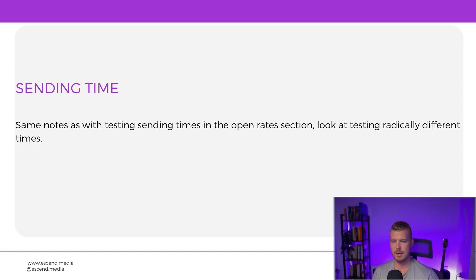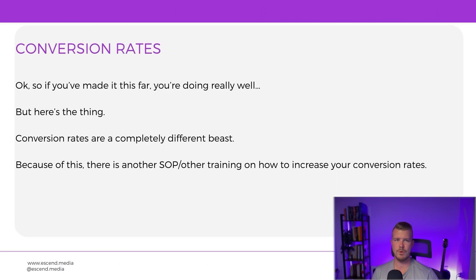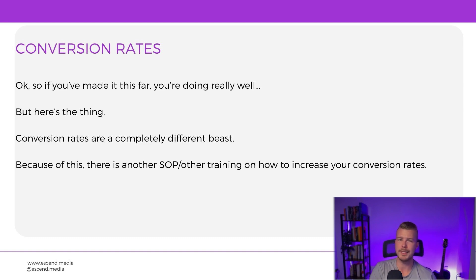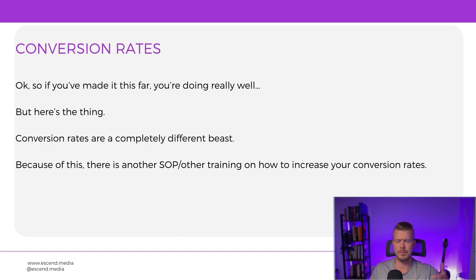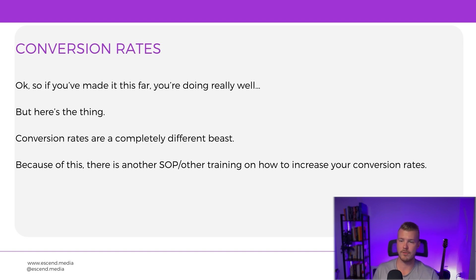Same notes apply for send time testing with campaigns as with flows — test radically different times. Conversion rates are a completely different beast: once people click out of your email there's a wide variety of things that could be happening — people bouncing, website issues, checkout problems, product unavailability, or seasonality. Seasonality is a real factor — a client selling winter products like soup sees a natural 30–40% conversion rate drop in summer. There's a whole separate SOP and training on conversion rate optimization.